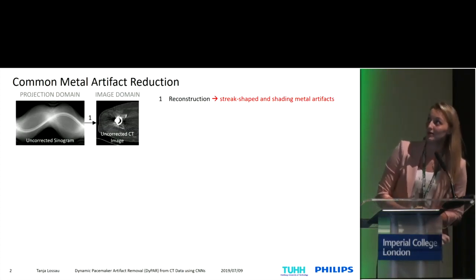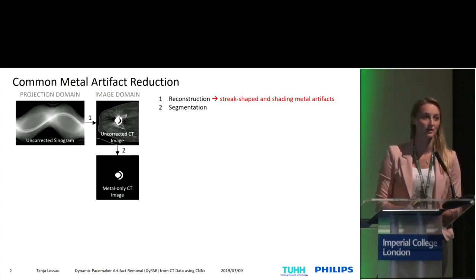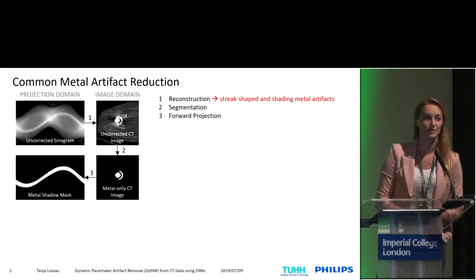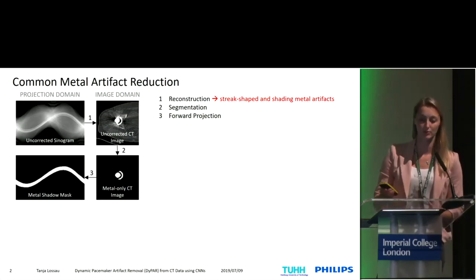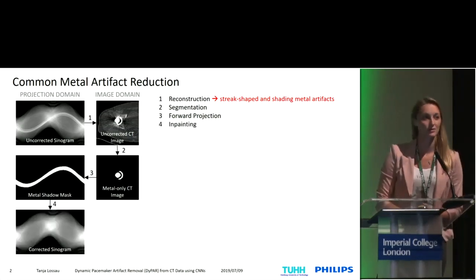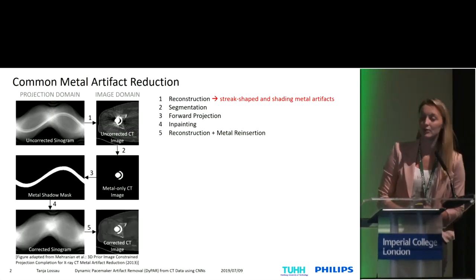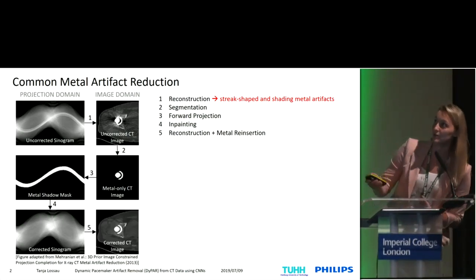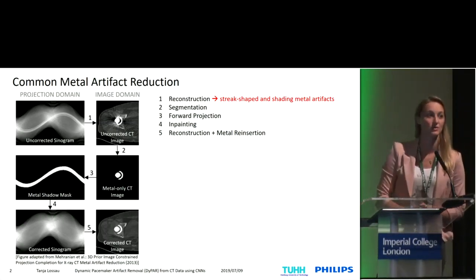In common metal artifact reduction pipelines, the next step is a segmentation of the metal in the image domain. When we do a forward projection, we can identify line integrals which are metal-affected in the projection domain. These are treated as missing data, so we can perform an in-painting to yield a metal-free sinogram. When we do a reconstruction, we obtain a corrected CT image without metal artifacts and can then reinsert the metal based on our metal-only CT image obtained in step two of this pipeline.